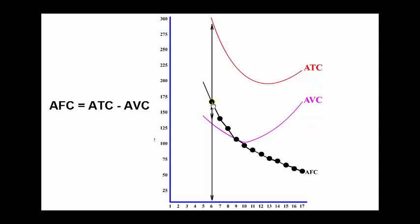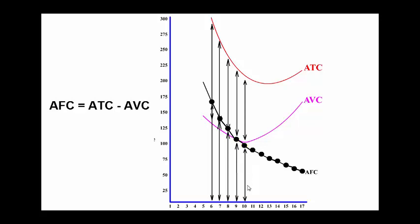Let's look at it on this graph. For instance, the distance here on the average fixed cost to the x-axis is identical to the distance between this point here on the average variable cost curve and this point here on the average total cost curve. So as I go on down here, the difference between the average fixed cost and the x-axis is the same difference between ATC and AVC.